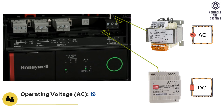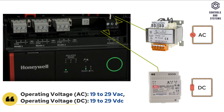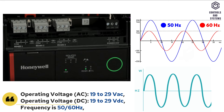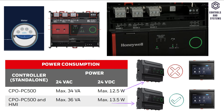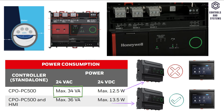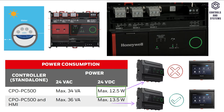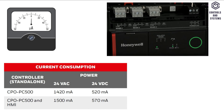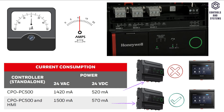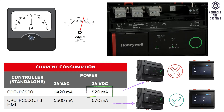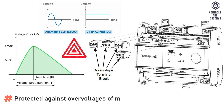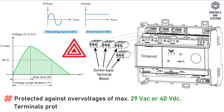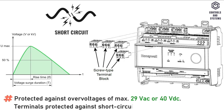Electrical Data: Operating voltage is 19–29 Volt AC or DC, frequency is 50 or 60 Hz. Power consumption for controller without HMI: maximum 34 VA in AC, maximum 12.5 Watt in DC. Current consumption for controller without HMI in DC is 520 mA. Protected against over-voltages of maximum 29 Volt AC or 40 Volt DC, and terminals are protected against short-circuiting.